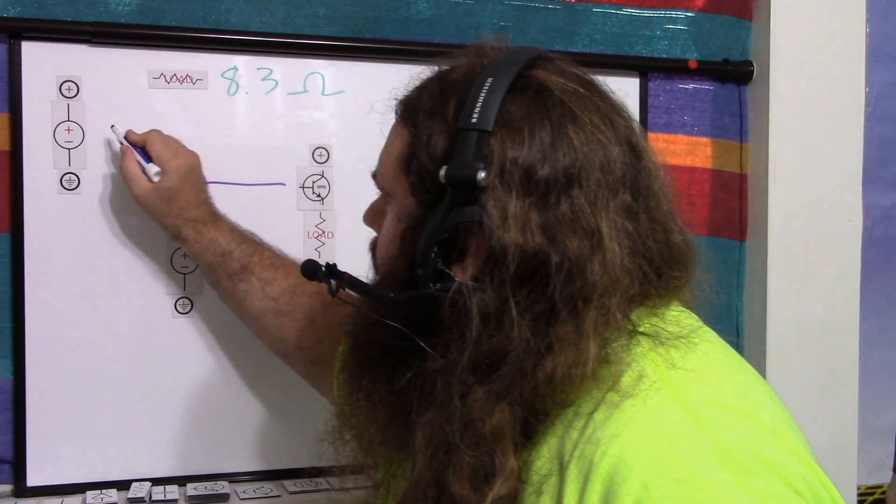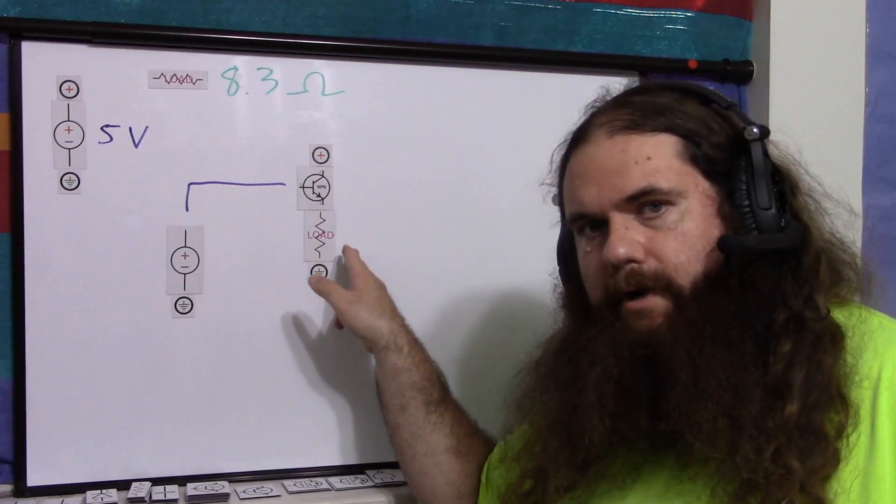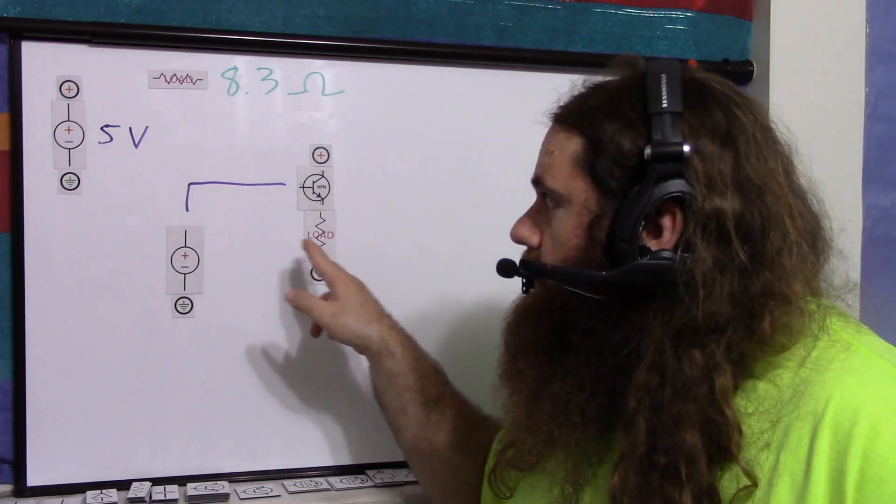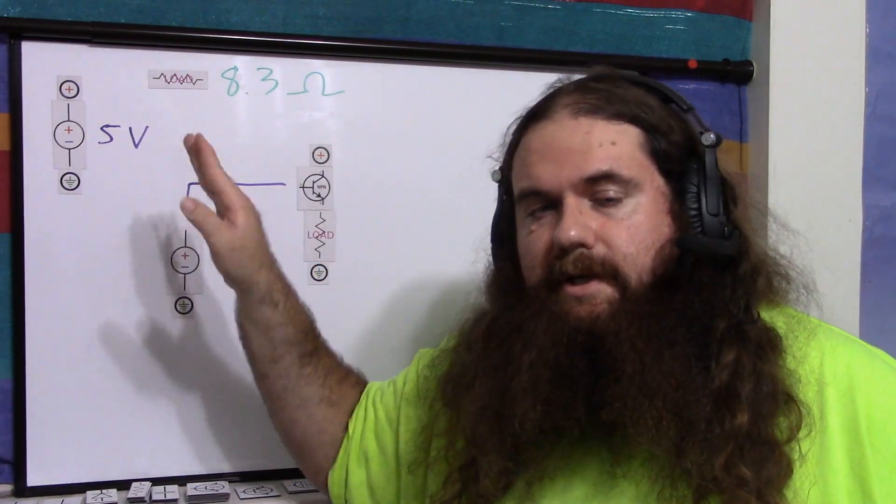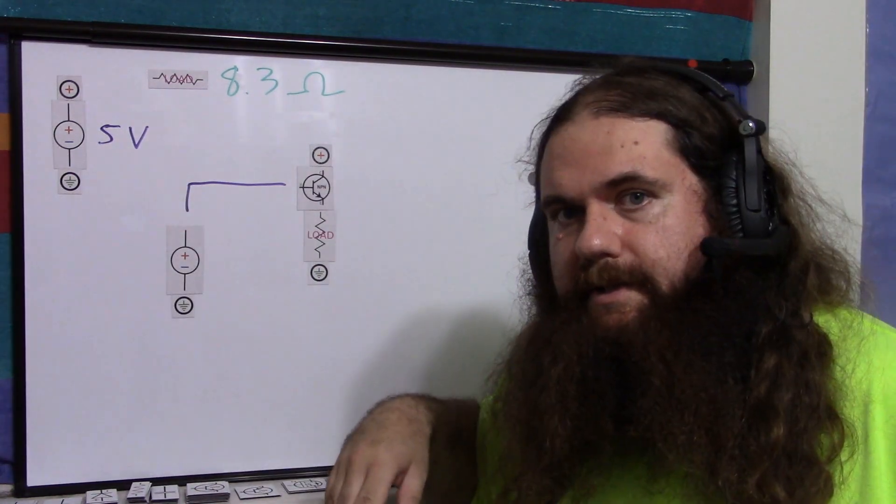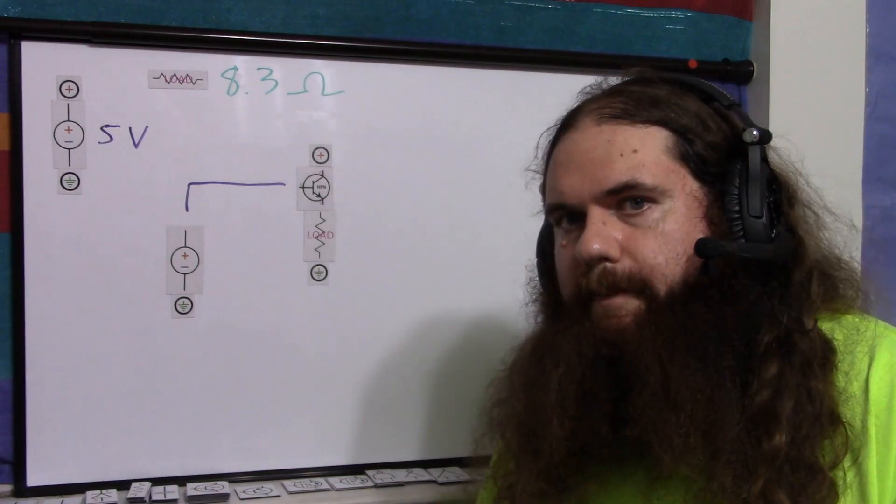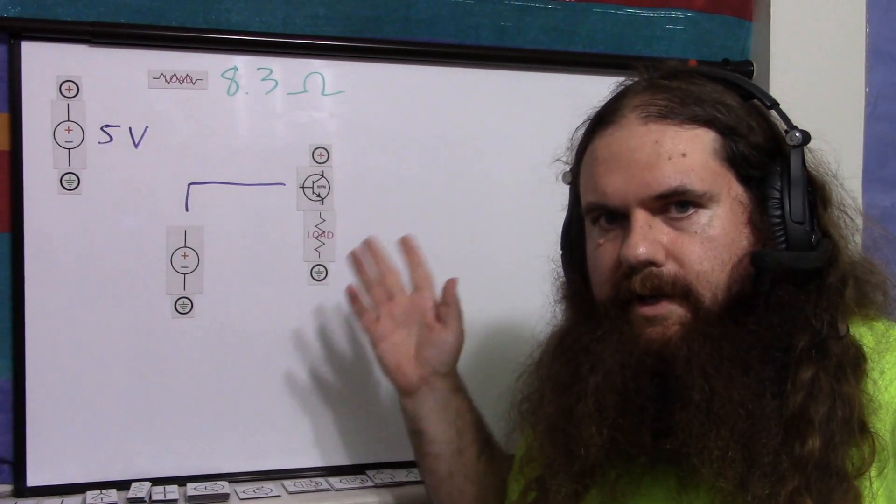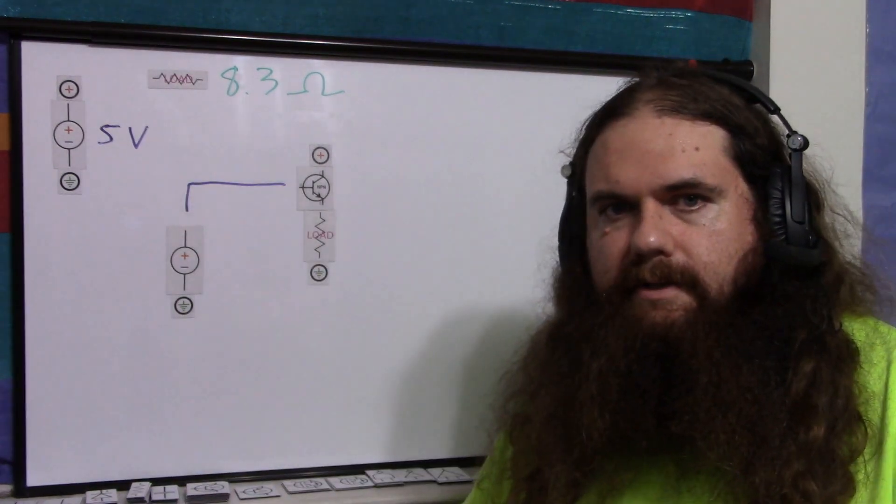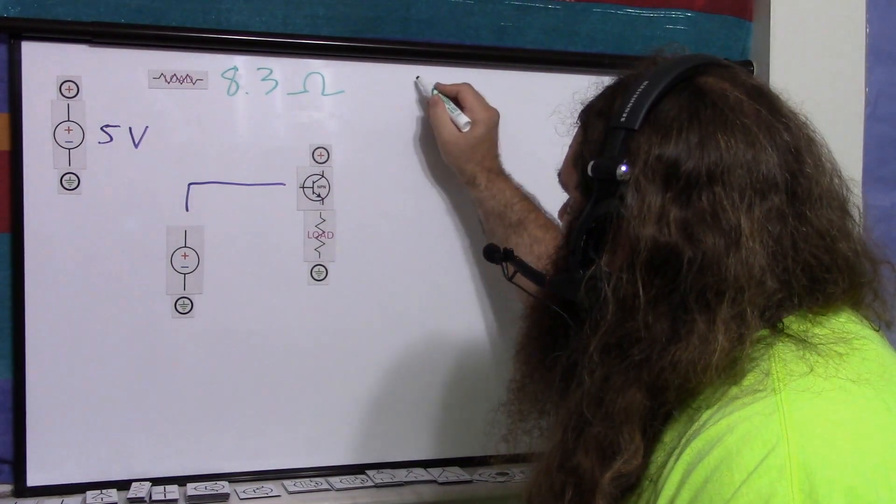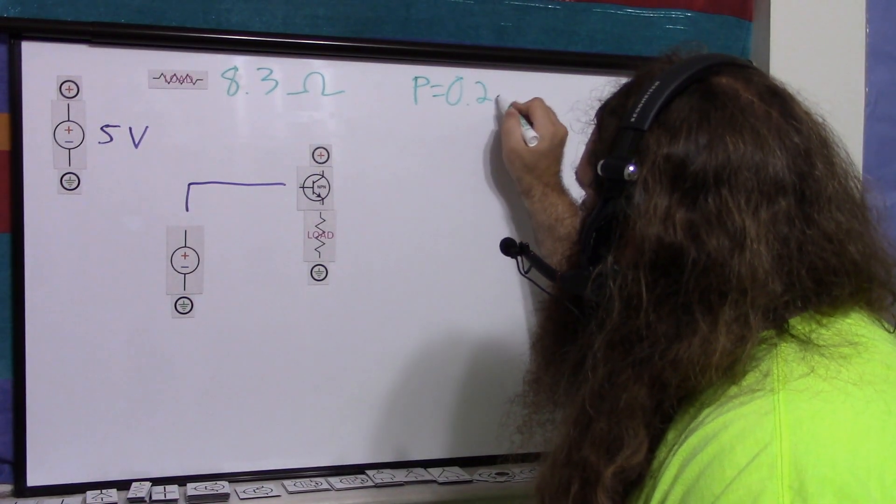So the load is 8.3 ohms. My supply voltage is 5 volts. I tried this with a bigger load earlier and I had to go up to 10, but I was able to do this with just a 5 volt supply this time. So that was pretty cool. And my power goal, instead of saying I want a certain voltage or current, I want a power. I want power to be equal to 0.25 watts.